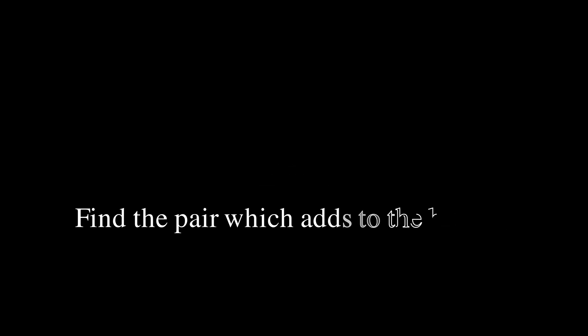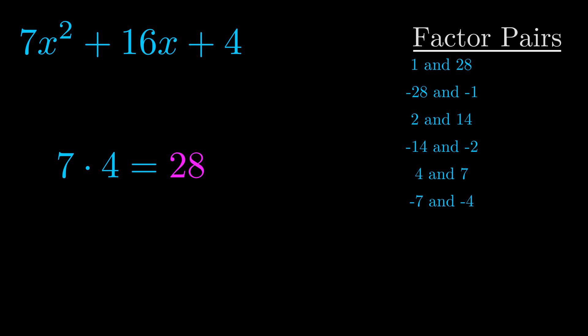The b value is the coefficient on the x term. That's the middle term, the one we haven't done anything with yet. And really, this is the only factor pair that we need.